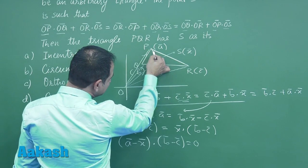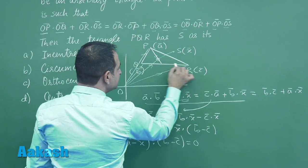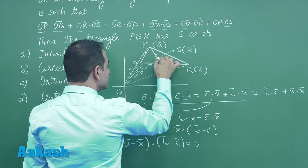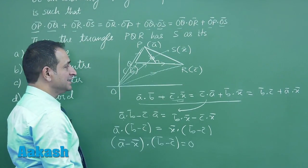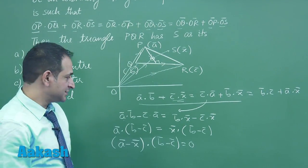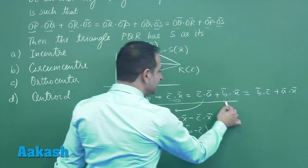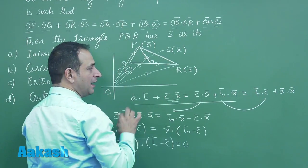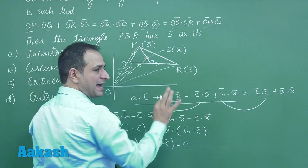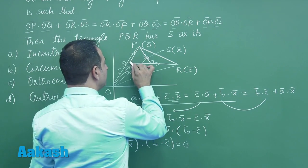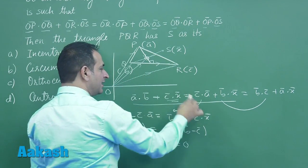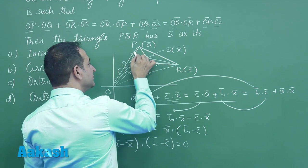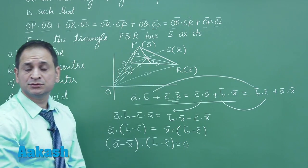So a - x is this vector which is perpendicular to b - c, so definitely x is lying on this altitude. Similarly, if you are equating these two, you can see again we have another altitude which is perpendicular to the next side. Again equating these two, we will have another altitude which is perpendicular to the third side.